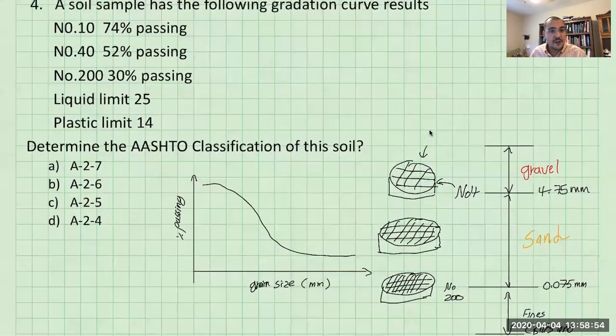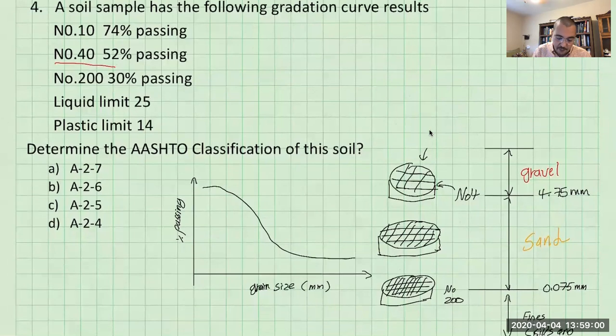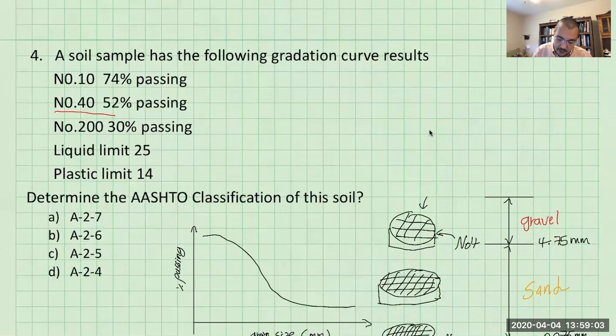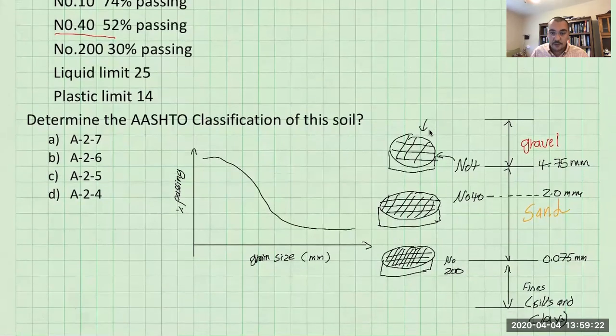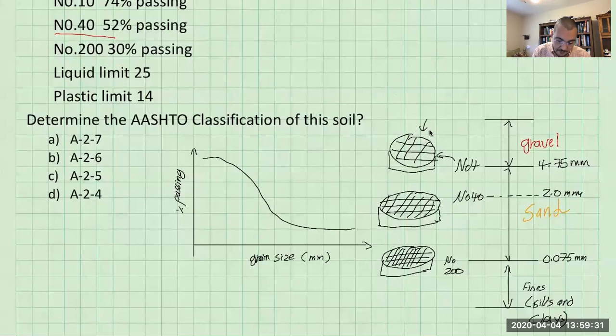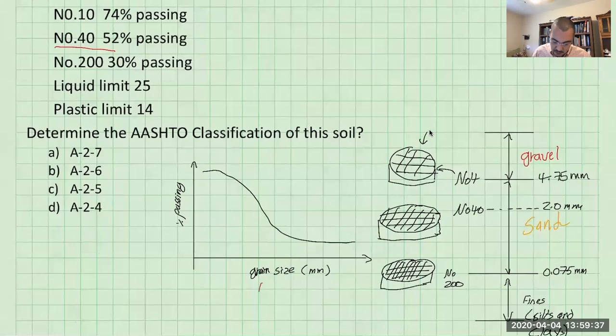Now here we have a number 40 in our question and we're given a percent passing. Number 40 is somewhere in here. So number 40 is somewhere in here and this sieve has an opening size of 2 millimeters.